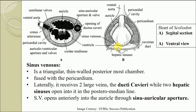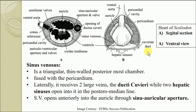The sinus venosus is fused with the pericardium, as you can see in the sagittal section — the walls of the sinus venosus are attached to the pericardium. Laterally, the sinus venosus receives two large veins referred to as the ductus cuvieri, also called the cuvarian ducts — one from each side — which open into this first chamber.